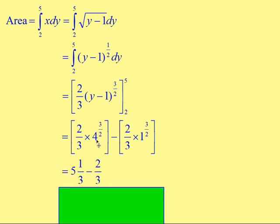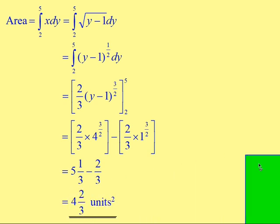Working that out: 4 to the power of 3 over 2 — take the square root of 4 which is 2, then cube it to get 8. So it's 8 over 1 times 2 thirds, giving 16 over 3, which is 5 and one third. For the lower limit: 1 to the power of 3 over 2 — square root of 1 is 1, 1 cubed is still 1, so that becomes 2 thirds. If you have 5 and one third take away 2 thirds, it leaves you with 4 and 2 thirds. And since it's an area we're dealing with, we have squared units.